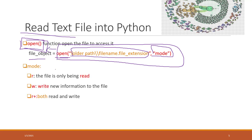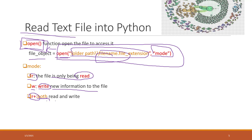There are several modes. If you use 'r', that means read mode — you can only read data from the file but cannot change it. If you use 'w', that means write mode — you can write new information into the file. If you use 'r+', that means you can both read and write.